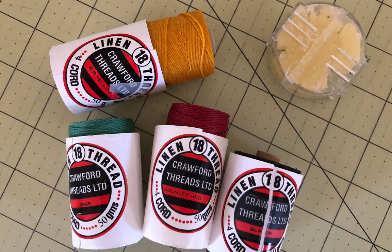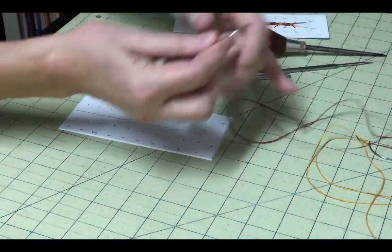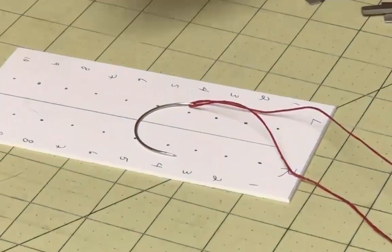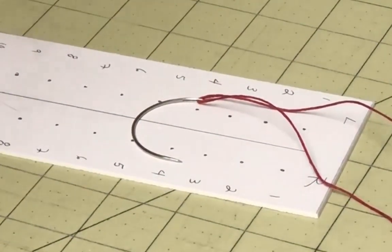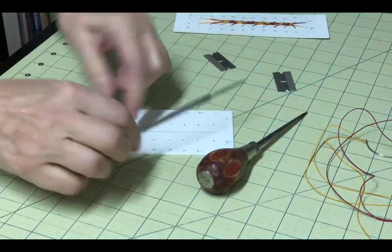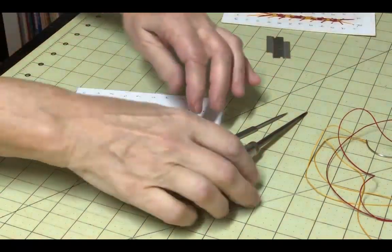I'm using a four-cord pre-waxed linen thread that's available from any bookmaking store. Also, curved needles really make working on this stitch so much easier. However, if you don't have curved needles, you can still do this stitch with straight needles. Either way, you'll need a pair of needles. You'll also need something sharp to poke holes in the bookboard. An awl works well for this. I also have a little tool from a medical kit that I use for this.